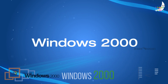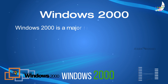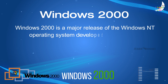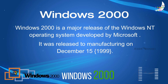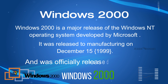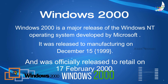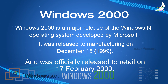Windows 2000 is a major release of the Windows NT operating system developed by Microsoft. It was released to manufacturing on December 15, 1999, and was officially released to retail on 17th February 2000.